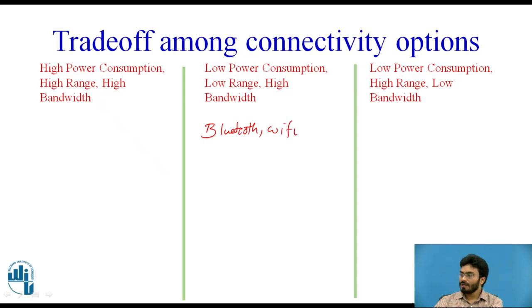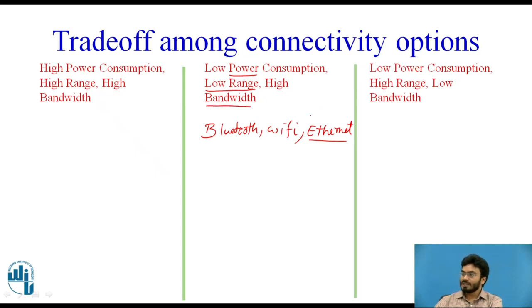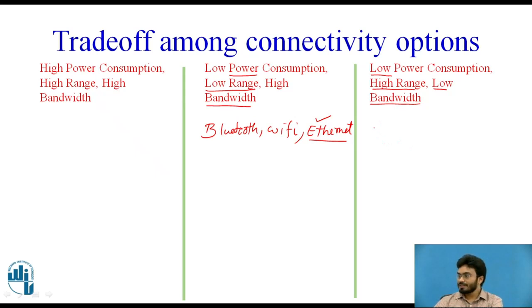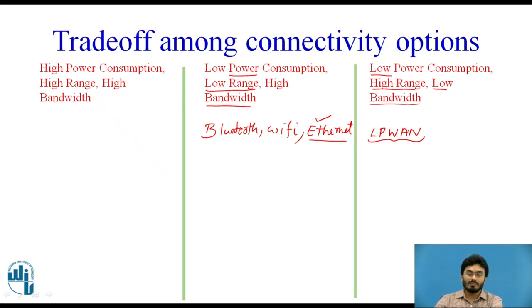The next category includes Bluetooth, Wi-Fi, and sometimes Ethernet. For Ethernet connectivity specifically, power consumption is very low, and since there is a limit on the length of the Ethernet cable, range is also very low — so this gives higher bandwidth, low range, and low power for embedded devices or computers using Ethernet. The last option is low power, very high range, and very low bandwidth. The most important protocol here is LPWAN — Low Power Wide Area Network — which offers variants for scenarios where power and bandwidth consumption are very low but range is very high.